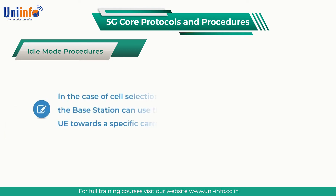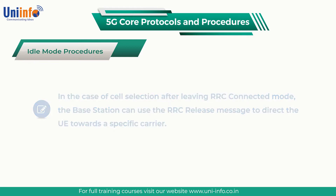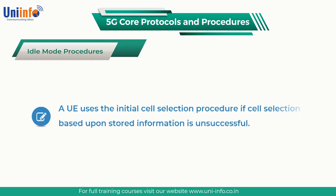In the case of cell selection after leaving RRC connected mode, the base station can use the RRC release message to direct the UE towards a specific carrier. A UE uses the initial cell selection procedure if cell selection based upon stored information is unsuccessful.